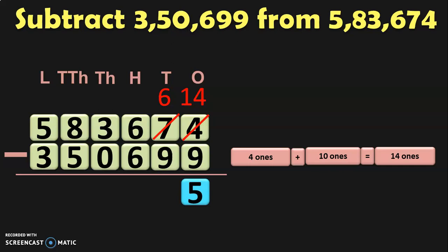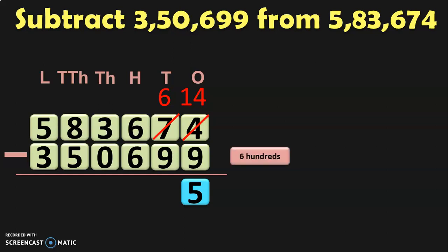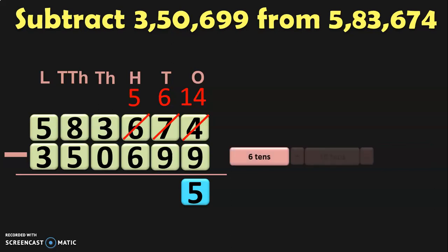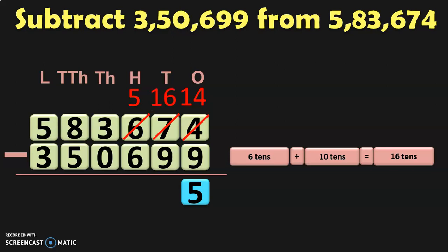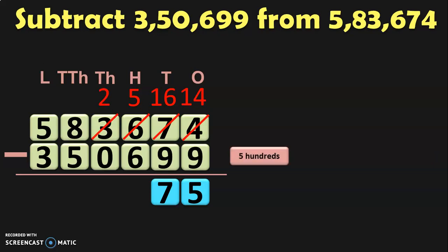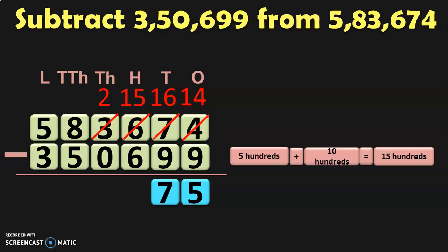Next, 6 minus 9 in the tens place cannot be done. So you move to the hundreds place and regroup 6 hundreds as 5 hundreds plus 10 tens. So 6 hundreds will become 5 hundreds and 6 tens plus 10 tens will become 16 tens. So 16 minus 9 in the tens place gives you 7. Coming to the hundreds place, 5 minus 6 cannot be done. So you borrow from the thousands place where you have 3 thousands. 3 thousands can be regrouped as 2 thousands plus 10 hundreds. When you give 10 hundreds to the hundreds place, 5 plus 10 hundreds becomes 15 hundreds. So 15 minus 6 in the hundreds place gives you 9.